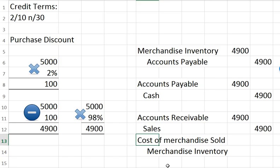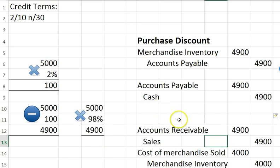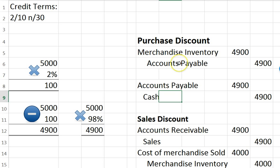The problem would tell you how much the inventory we sold was originally purchased for. Let's say we bought this for $4,000 — on this transaction we have a $900 gross profit. That is how the purchase discount works and how the sales discount works. The credit terms are read the same way and work the same way; the only difference is whether you are purchasing inventory and taking advantage of a discount offered to you, or selling inventory and offering a discount to your customer to pay you early.